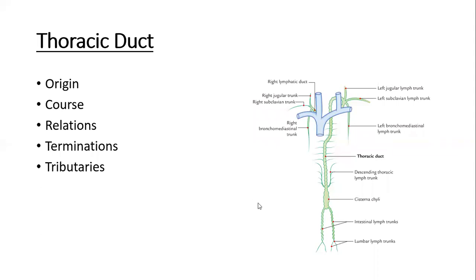The lymphatic continues in the form of a vessel called the thoracic duct. Since this duct is present and located for most of its course in the thoracic cavity, we call it the thoracic duct.